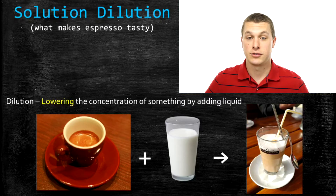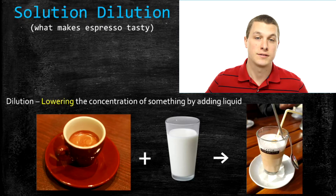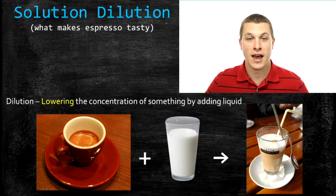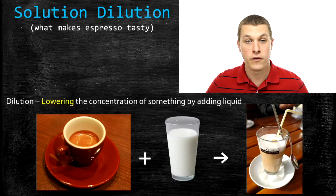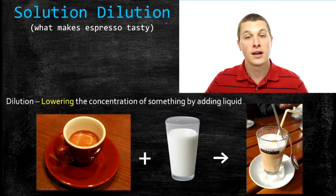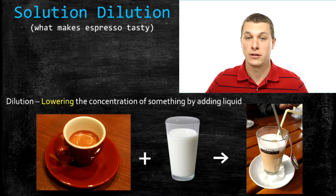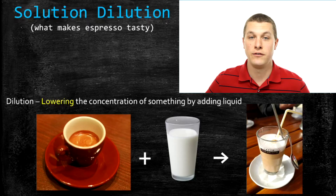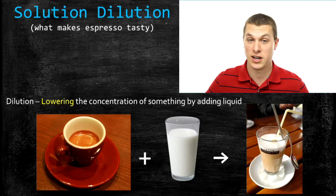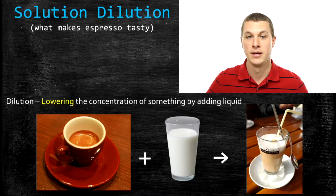The espresso has a high concentration of caffeine; your latte has a lower concentration of caffeine because we've added milk to it. If you're a chemistry geek, you might ask how you could calculate the concentration of caffeine in your latte from the concentration in your espresso. Dilution just means adding liquid to something to make it less concentrated — you also do this with a mixed drink, like adding soda to whiskey. Solution dilution happens all the time; it's just making something less concentrated.